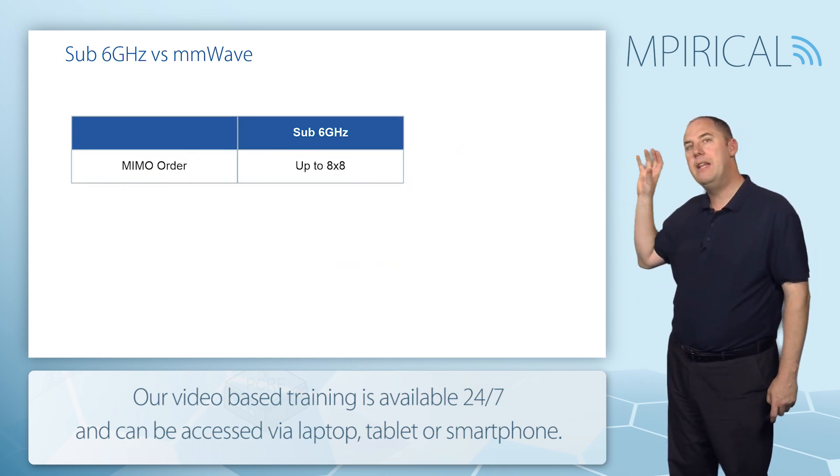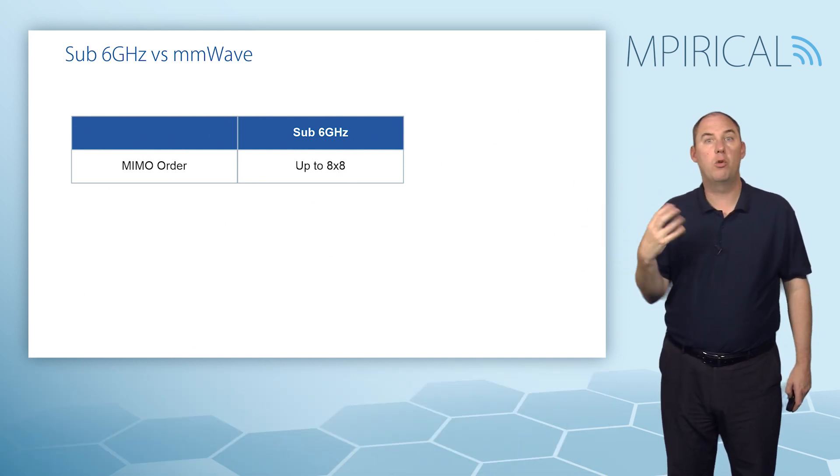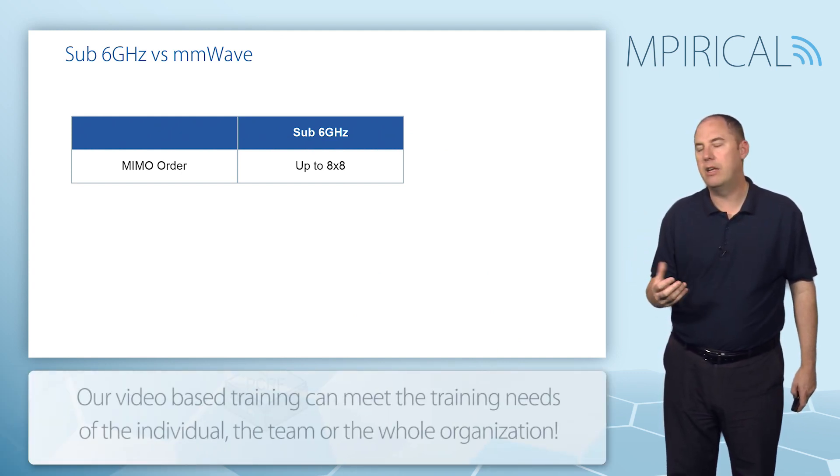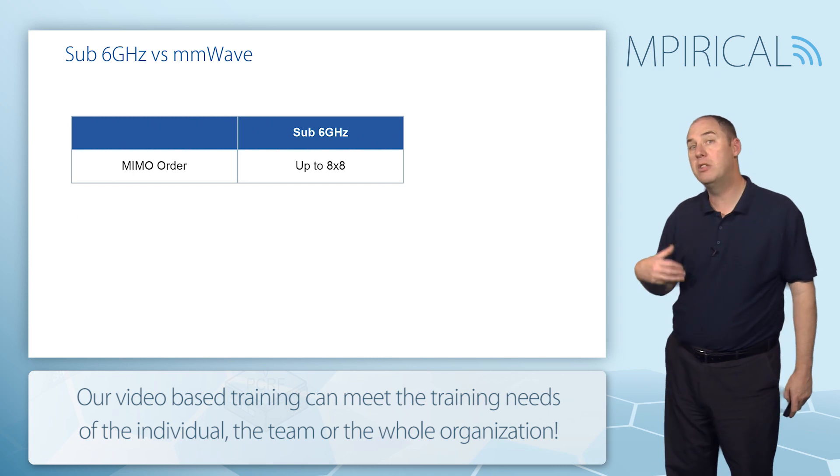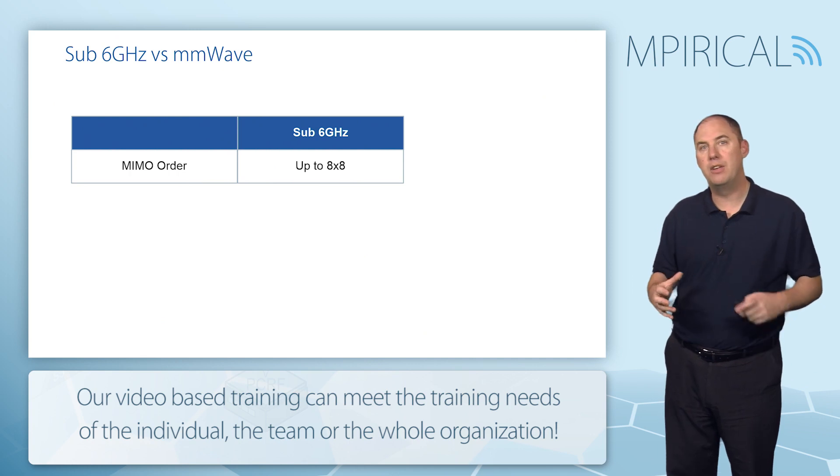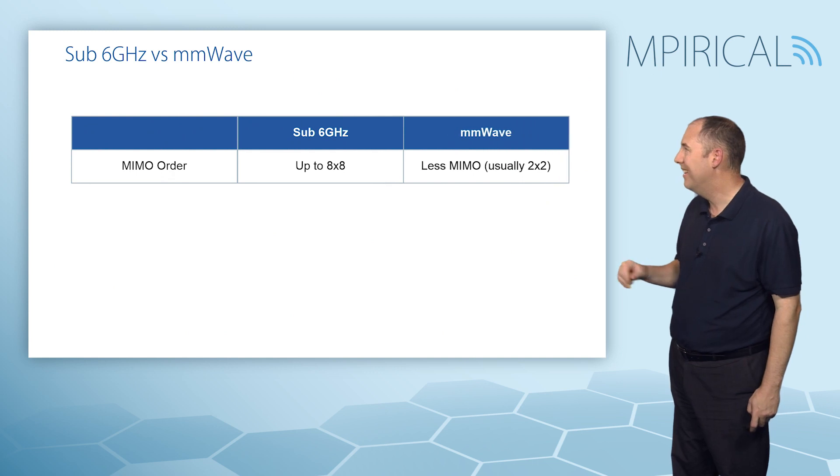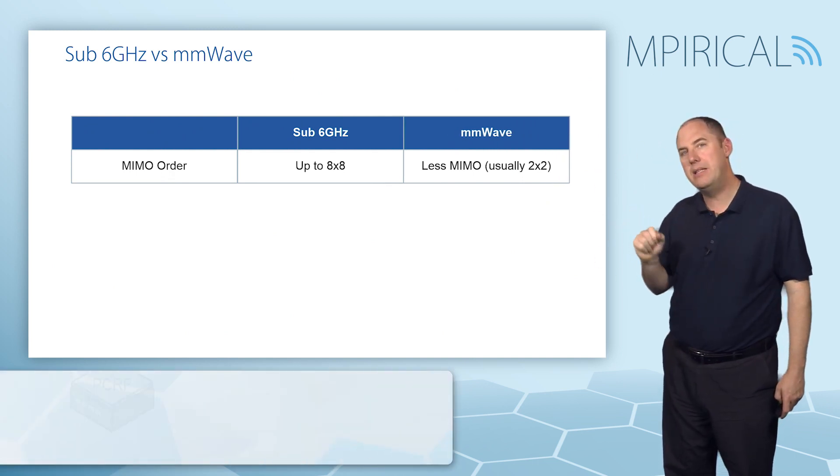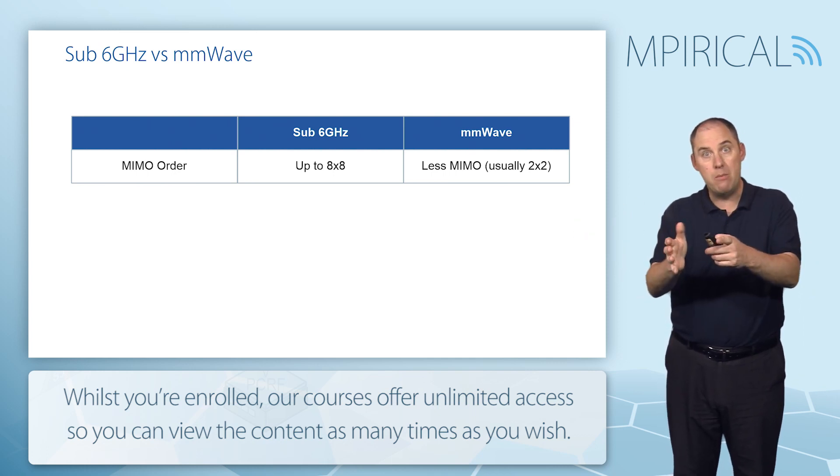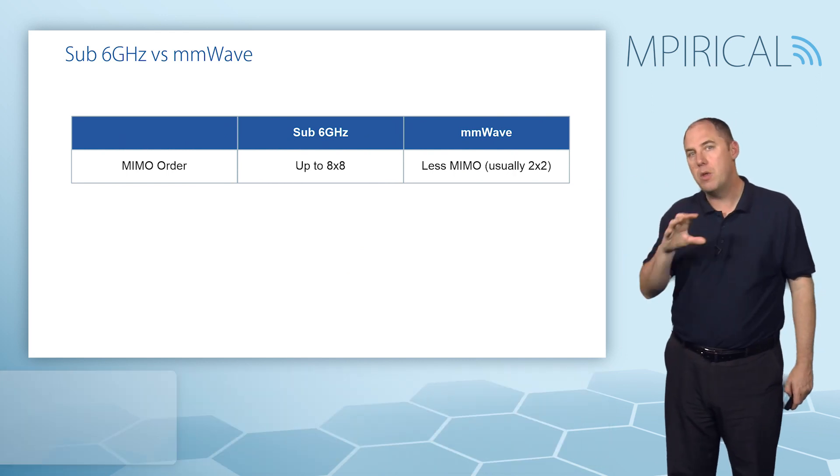In the sub-6 gigahertz band, if you start talking about MIMO, we are currently up at sort of 8x8 MIMO as a good talking point. We start talking about having 8 layers going down to a device, and that's because of the spatial diversity that we have within the characteristics of the radio environment at those frequencies. As we start hitting the millimeter waves, however, we lose some of that spatial characteristics and we go towards a beam with less multipaths, so the order of MIMO typically reduces within the beam.